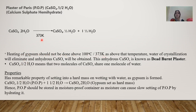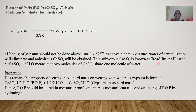Heating of gypsum should not be done above 100°C or 373 K. If the temperature is exceeded, more heat causes the remaining water of crystallization — including the half molecule — to also be eliminated, resulting in anhydrous CaSO4.